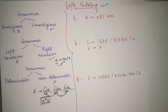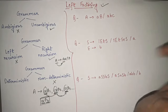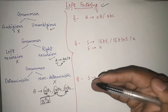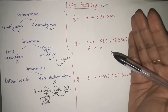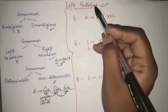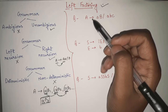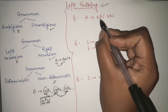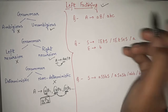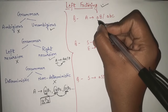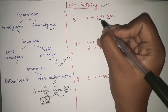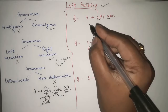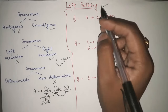Now we will see how to do left factoring — it is actually very easy. I will show you directly with the help of examples. Here I have three examples of grammar. These grammars are non-deterministic. What we will do is apply the left factoring method and convert these non-deterministic grammars into deterministic grammar. First: A → aB | aBC. This is non-deterministic because we have the same prefix 'a', so the parser gets confused which production to go into.